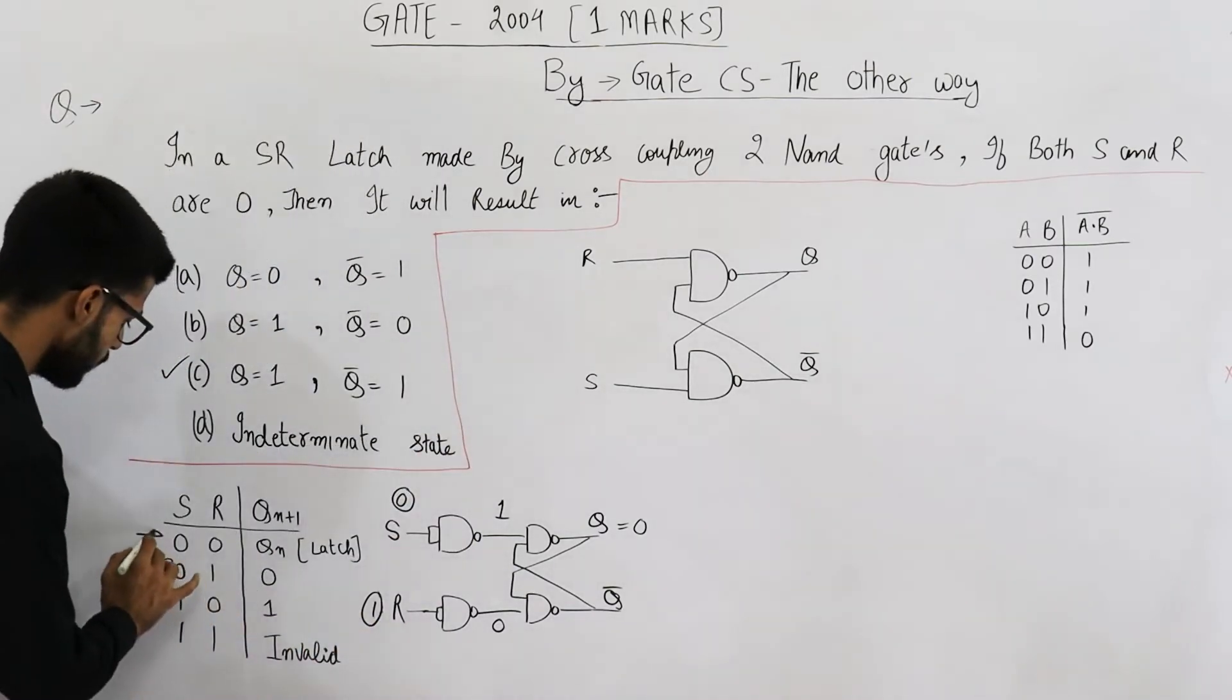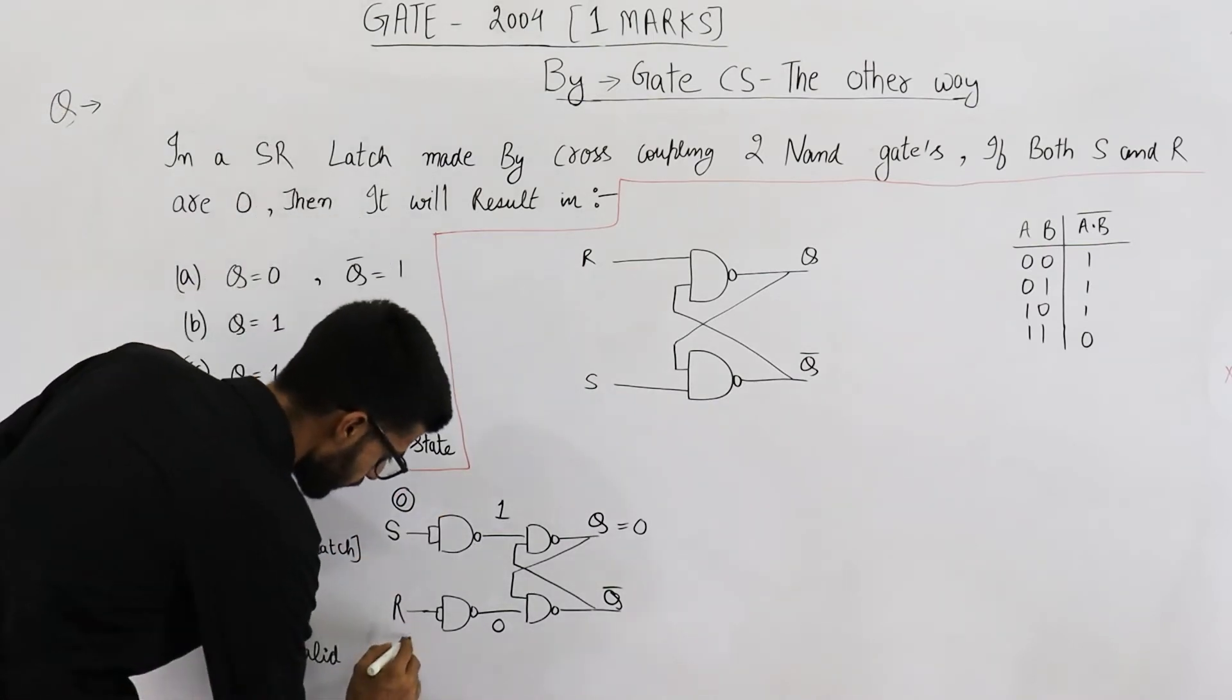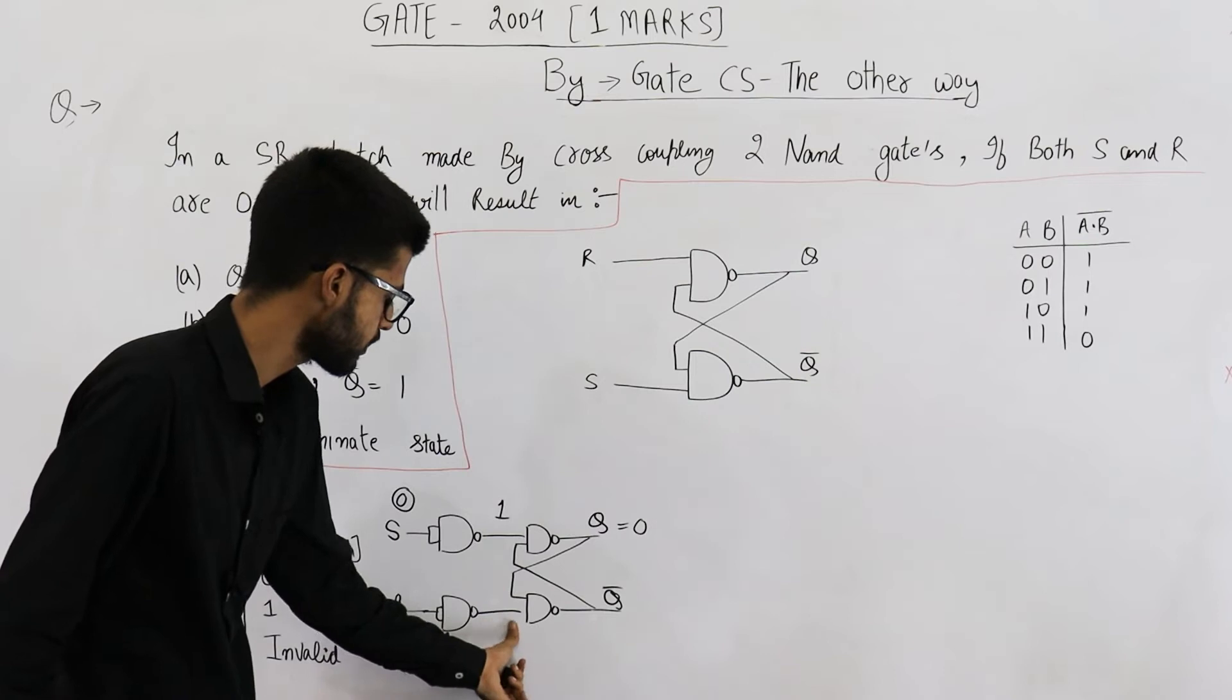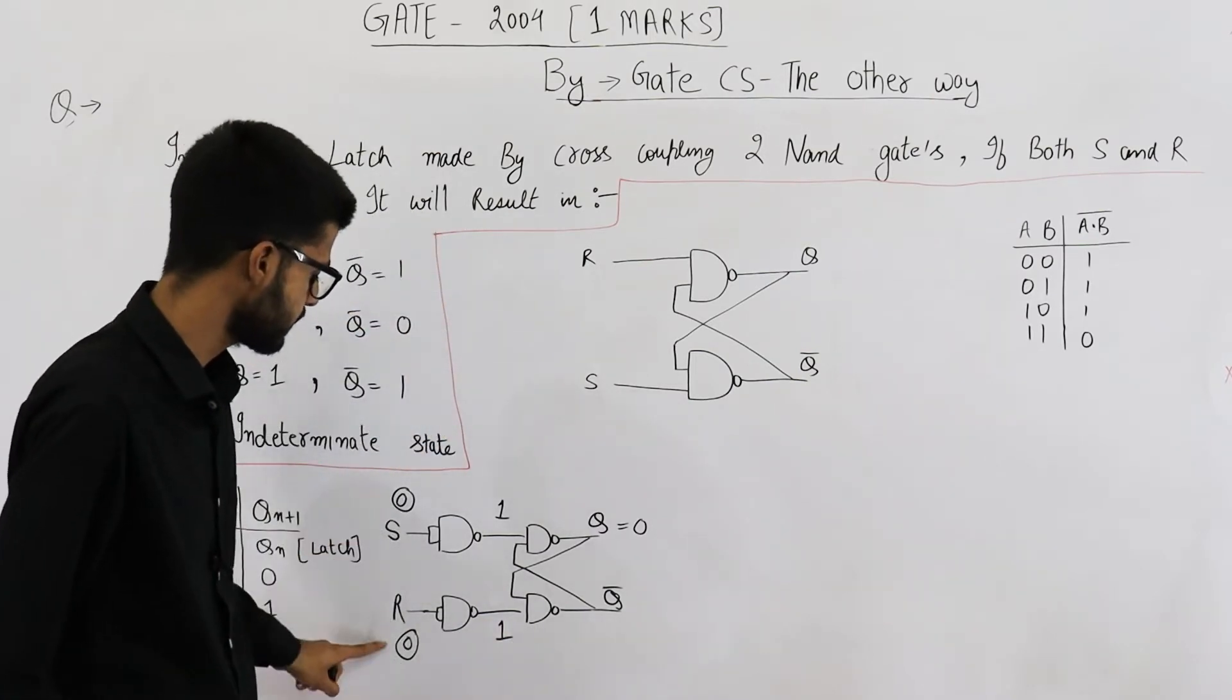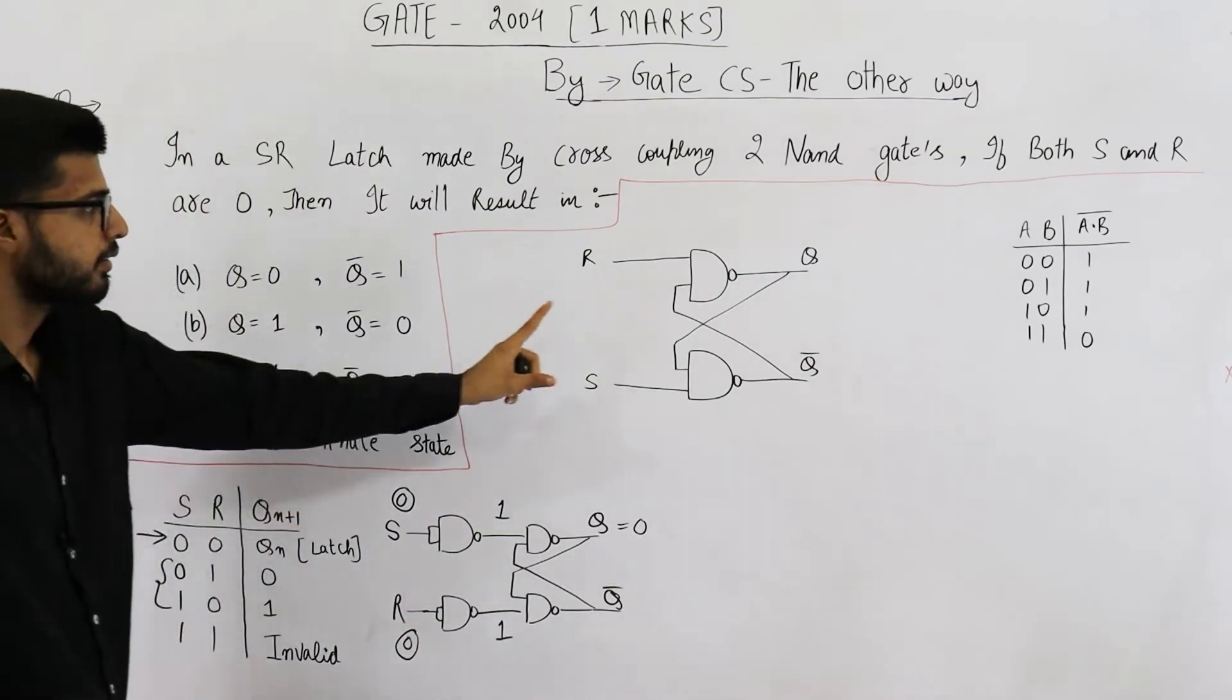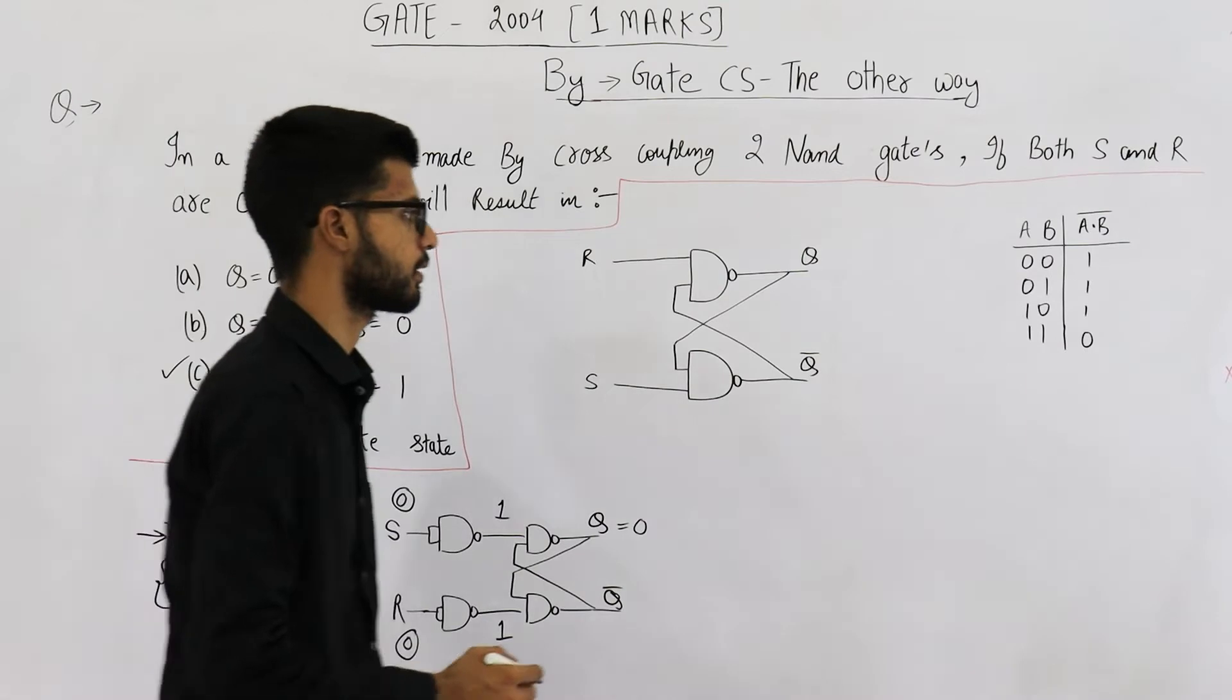What about this input? When both of them are 0, 0. You can see, the output that these inverter gates will give is 1, 1. So if S and R are 0, 0, both of them will be 1, 1. That means, in such a SR latch, these outputs will be reversed. Let me just draw this table once again.